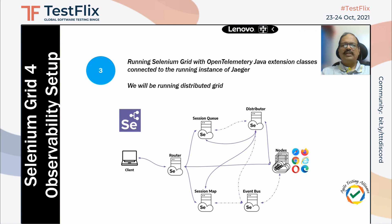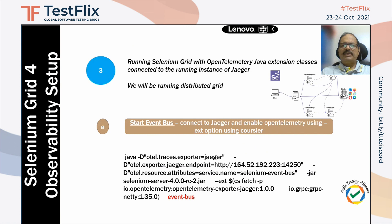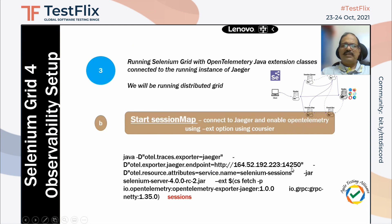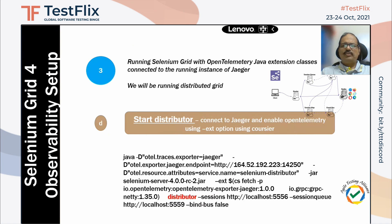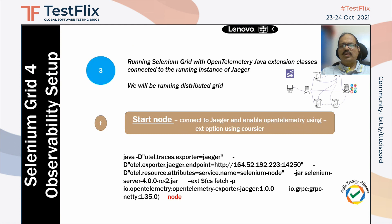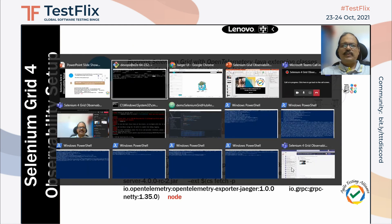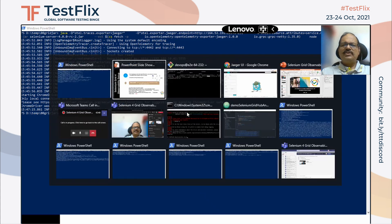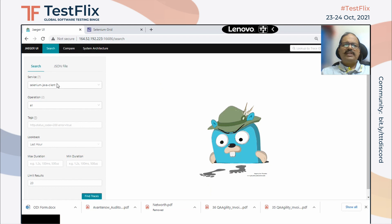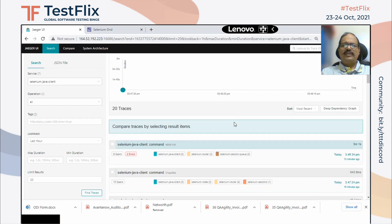In our setup here, we're looking at how to run distributed Grid and how we've set things up. We have started the Event Bus, captured the endpoint inside the command, and specified where the entire trace is to be done. Similarly, we have started the Session Map, Session Queue, Distributor, Router, and Node using all these commands. In the interest of time I'm not showing each one, but these are already started and running — except the node, which is not running.